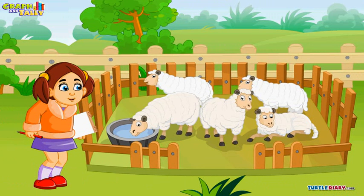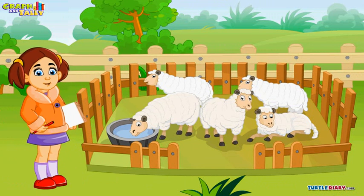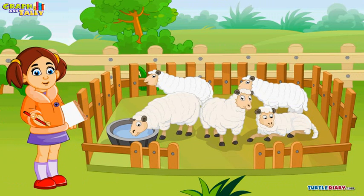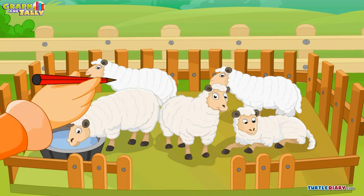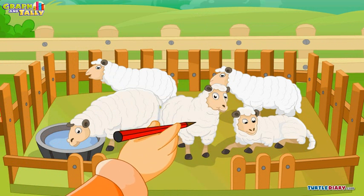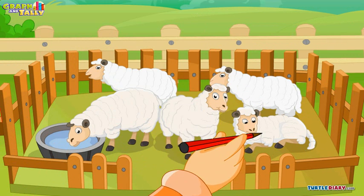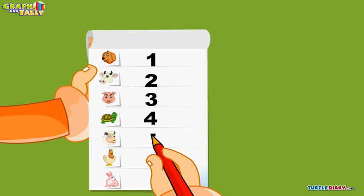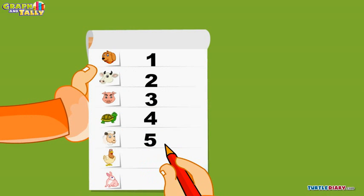Here are some sheep in the pen. Can you count them for Adam? One, two, three, four, and five. There are five sheep in Adam's farm.